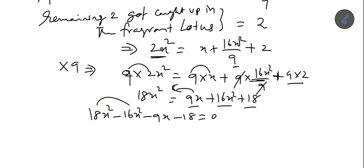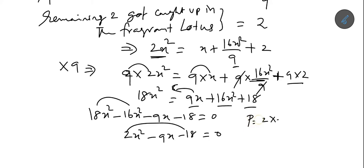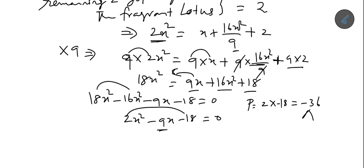Now, 18x² minus 16x² equals 2x². So the equation becomes 2x² minus 9x minus 18 equals 0. The product of the roots is 2 times minus 18, which equals minus 36. The sum of the roots is minus 9.